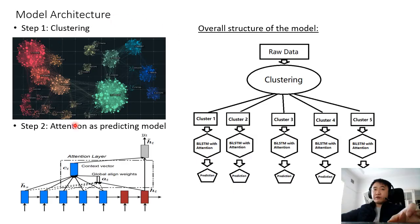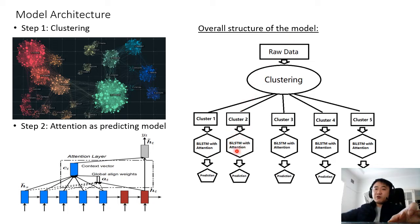This is the overall structure of our model. There are two steps. The first is clustering, which allocates our training data into different clusters. The second is attention — we apply attention to each cluster for training. During the training stage, the cluster allocates training data into different groups, and for each group we apply a BiLSTM attention for training. When new data comes in, the clustering algorithm decides which cluster the new data belongs to, and it goes to the corresponding model for final prediction.